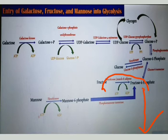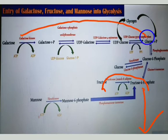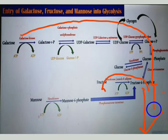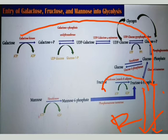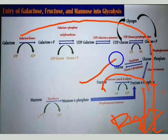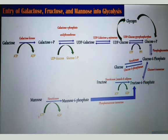In describing galactose metabolism, write all the steps up to fructose-6-phosphate, and then from fructose-6-phosphate up till pyruvate. If the question is regarding fructose conversion, there is only one step — fructose is converted into fructose-6-phosphate — and then the remaining glycolytic steps are repeated.